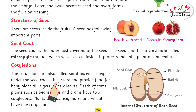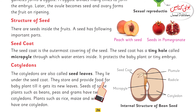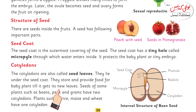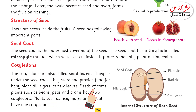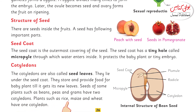The main role of the cotyledons is to store food for the baby plant so that it can grow into a new plant. Seeds of some plants such as beans, peas, and grams have two cotyledons. Plants such as rice, maize, and wheat have one cotyledon.